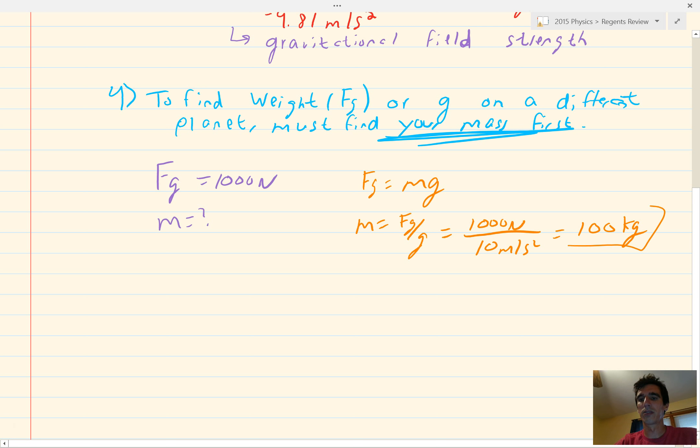Now, once you know your mass, you can then take your mass to any planet, and your mass stays the same. And, you can either find your weight, Fg on the planet, if they give you the acceleration due to gravity, or you can find the acceleration due to gravity, if they give you your weight on the planet, using the same formula, Fg equals mg, on your different planet.